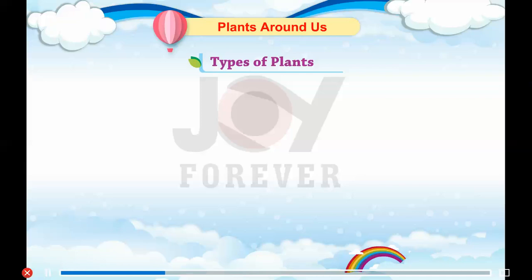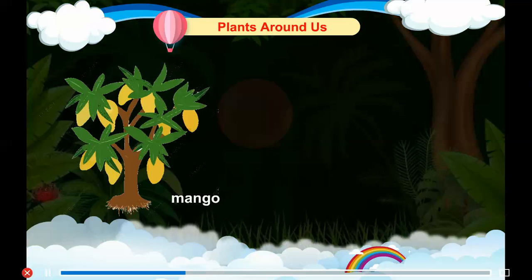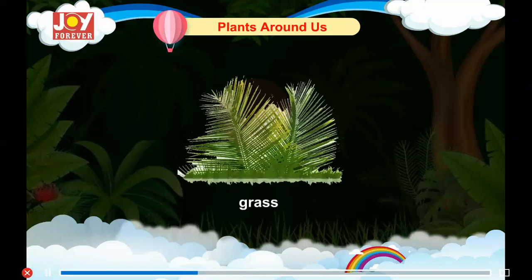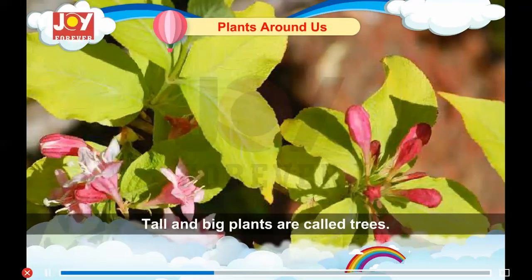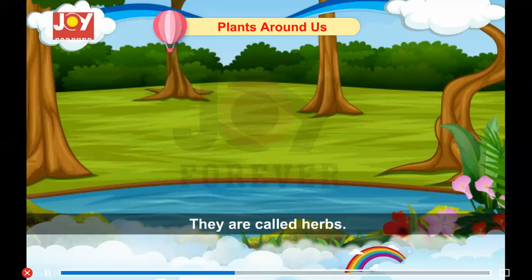Types of Plants: Plants are of many types. Let's read about them. Mango, Coconut, Grass, Coriander — tall and big plants are called trees. Some small plants have soft and green stems. They are called herbs.